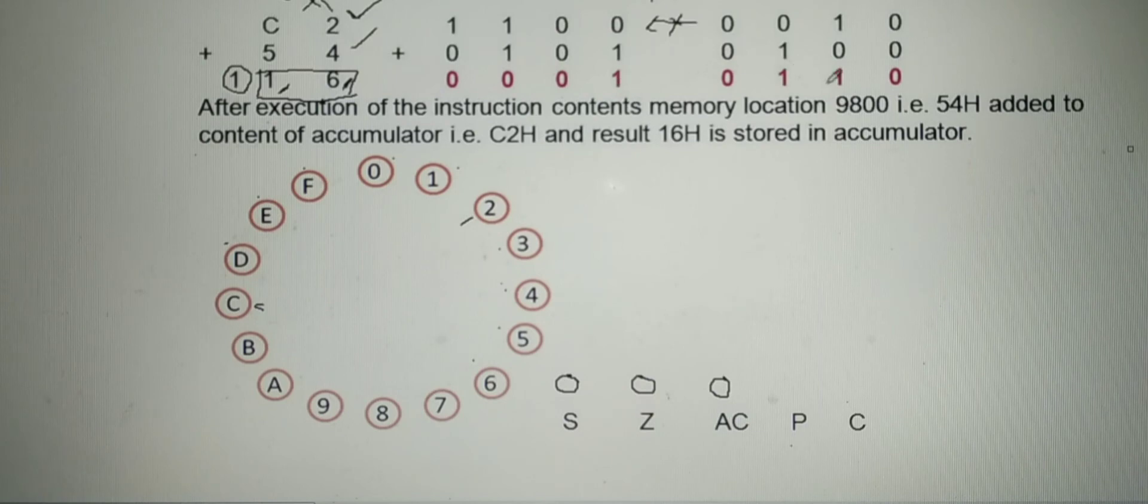Here 1 is present 3 times, that is odd number of times. Therefore, parity flag will reset. That is 0. And carry is generated from 8th bit, that is most significant bit, or carry is generated from 2nd nibble. Therefore, carry flag will set. Therefore, carry flag becomes 1.